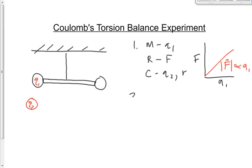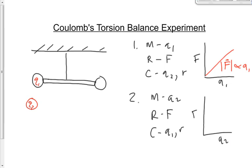In the second experiment, he changed Q2 while keeping Q1 and distance R constant. The responding variable was again force. Plotting F versus Q2 gave another straight line. As Q2 doubled, F doubled; as Q2 tripled, F tripled. Both are linear relationships — the magnitude of the force is directly proportional to Q2 as well.